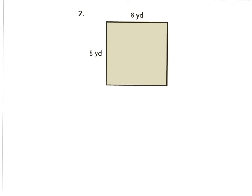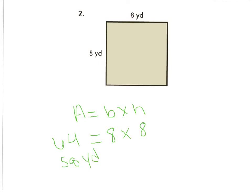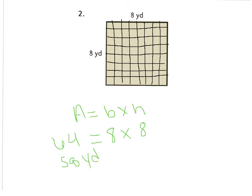Number two: find the area of this square. I know it's a square because the height and the base are the same — a square has all equal sides. Our formula is Area equals base times height. We have a base of 8 and a height of 8. Multiplying 8 times 8 gives us 64 square yards. If you cut the square into square units, you would have 64 squares, and since our units are yards, the area is 64 square yards.